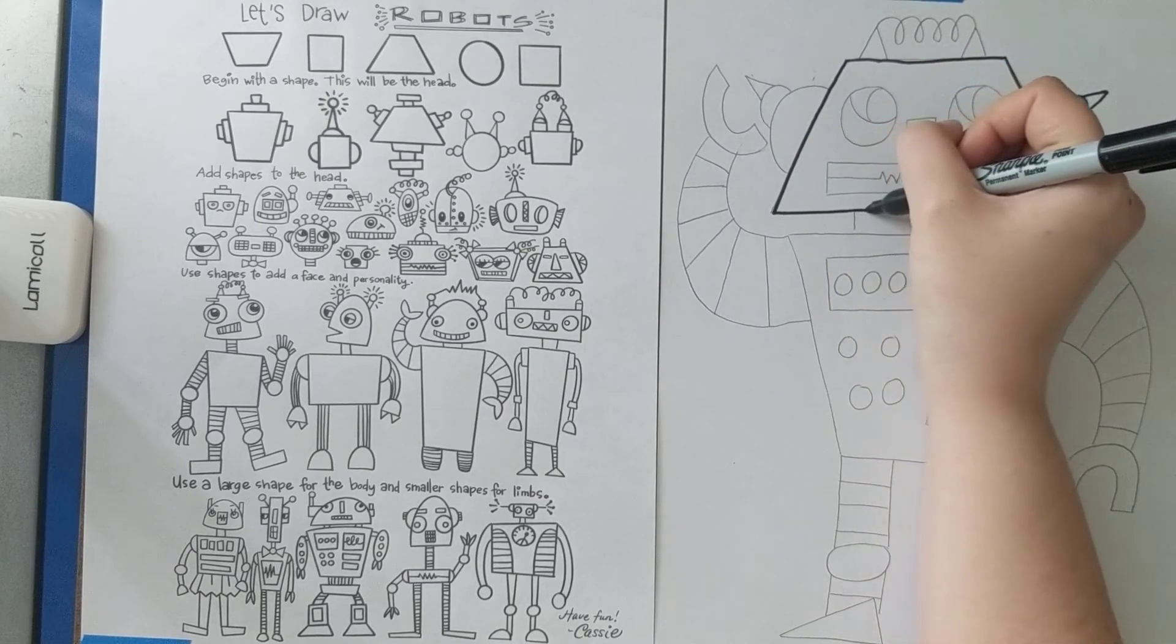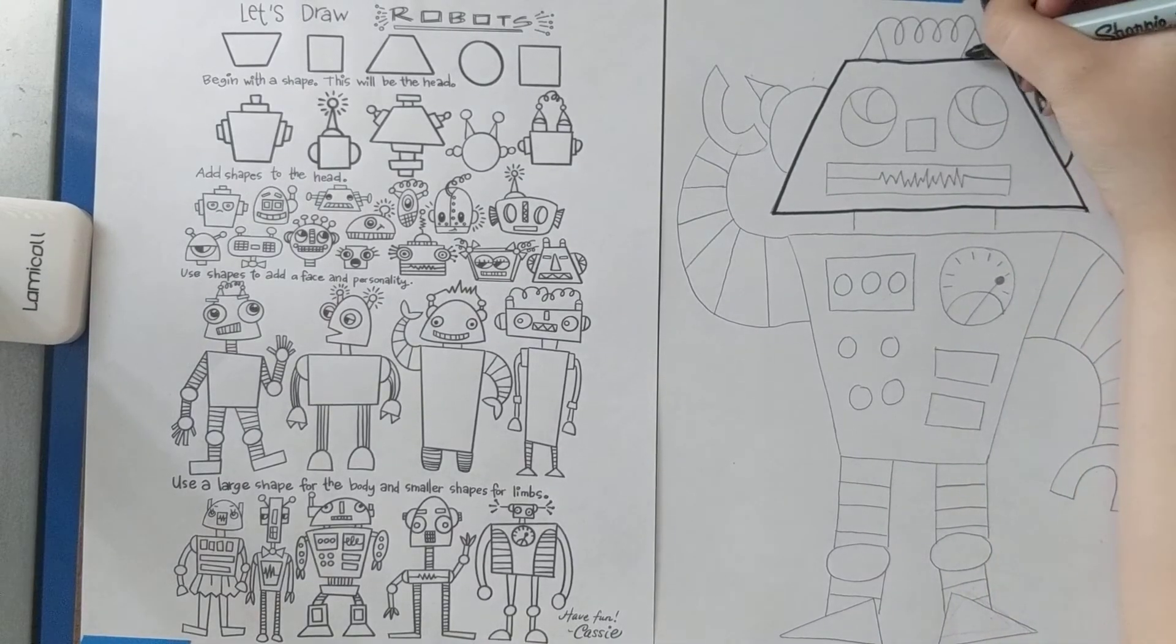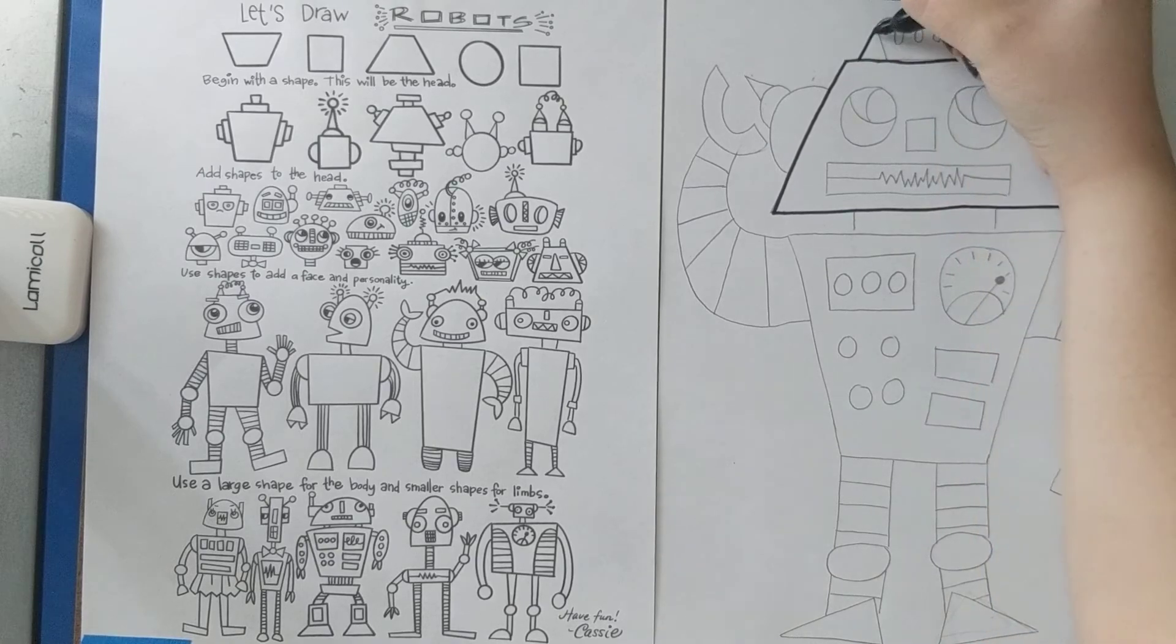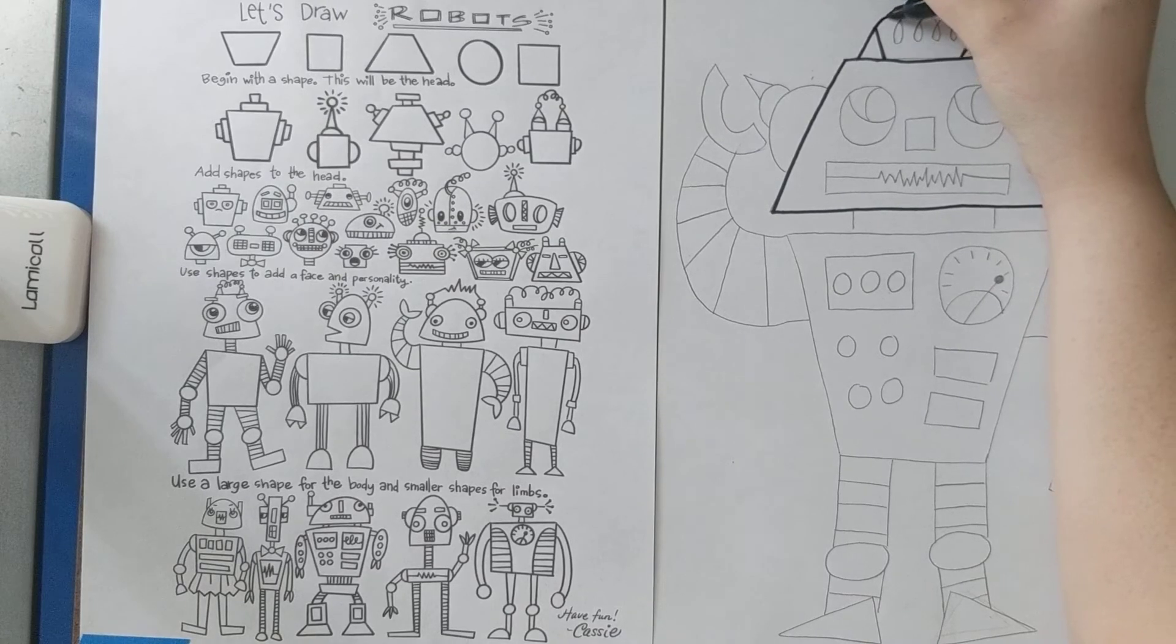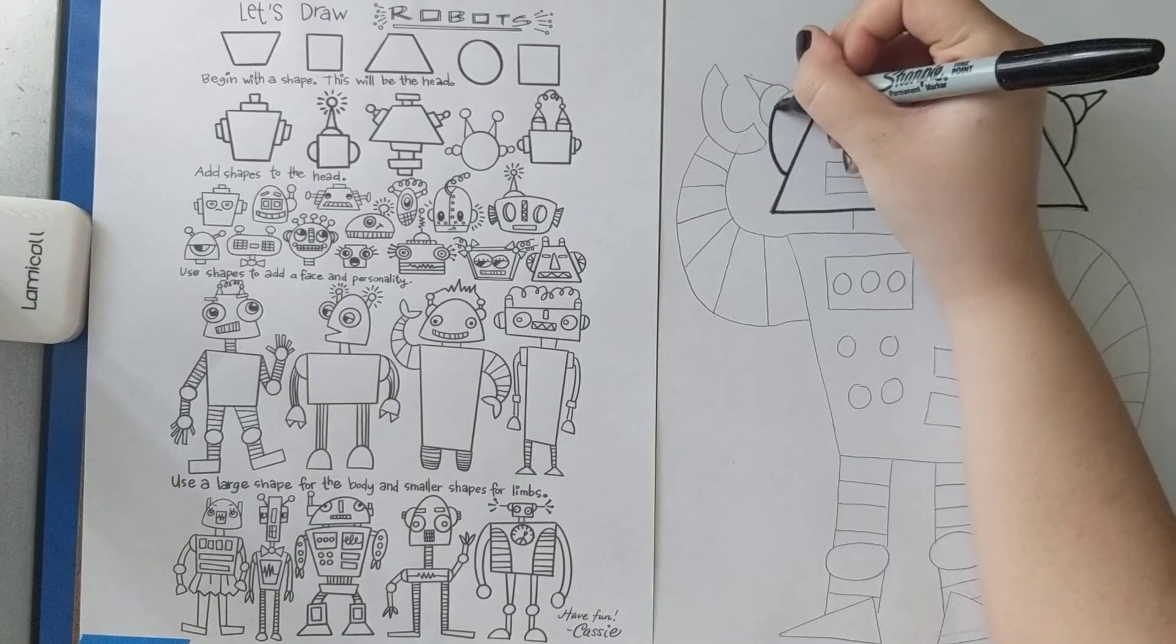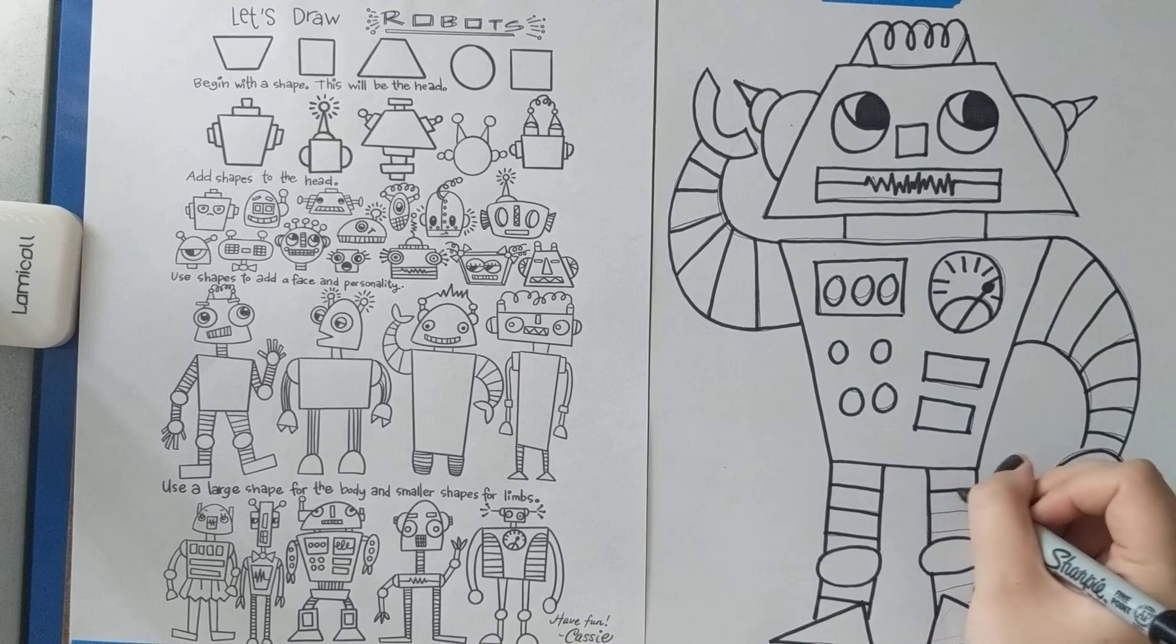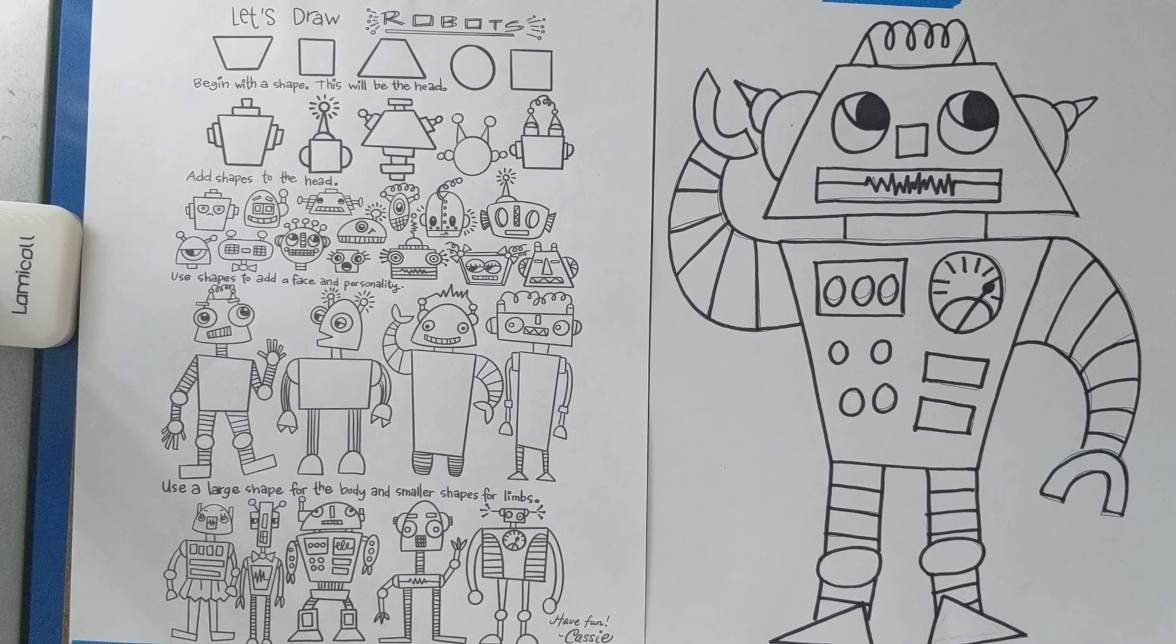But if you're using something like a Crayola marker, you shouldn't have that problem and you'll be okay. Plus Crayola is washable. So no biggie. And if you're outlining and you miss some of your pencil lines like I just did right there, you can always erase them because once the marker is there, you don't need the pencil. So if you have a really big eraser, it's really good for that too. All right.